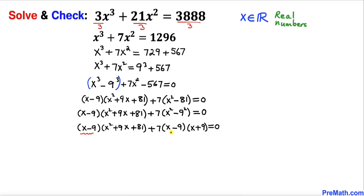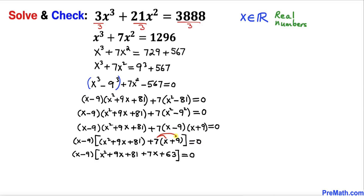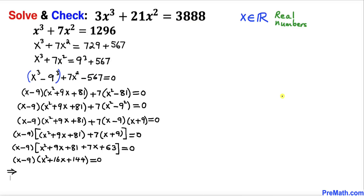We can see that (x − 9) is a common factor, so we factor it out. Inside the bracket we have x² + 9x + 81 + 7(x + 9). Distributing 7 gives 7x + 63, and combining like terms: 9x + 7x = 16x and 81 + 63 = 144, leaving us with (x − 9)(x² + 16x + 144) = 0.